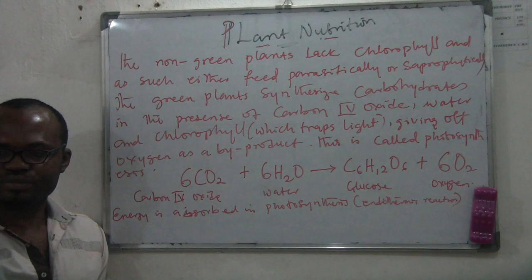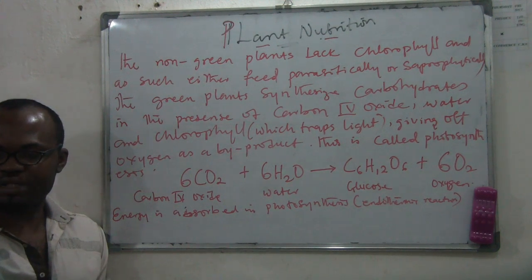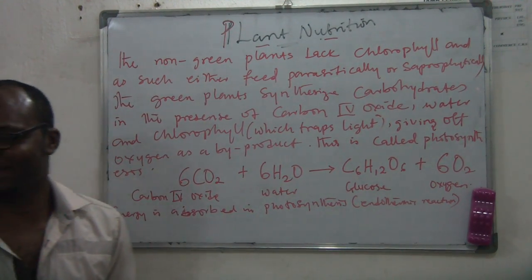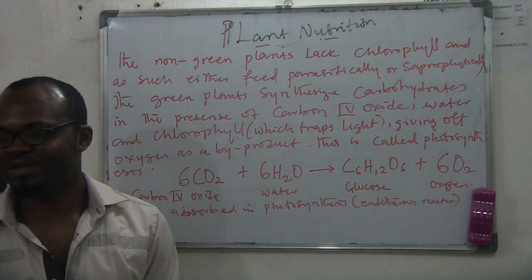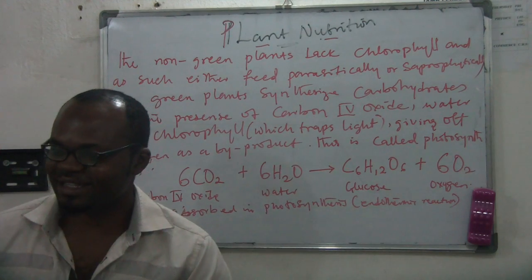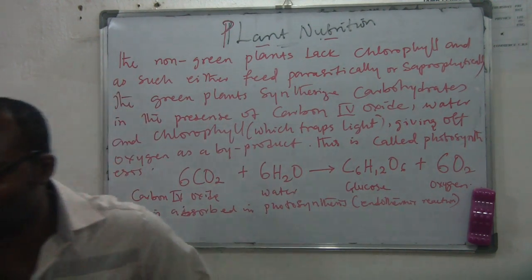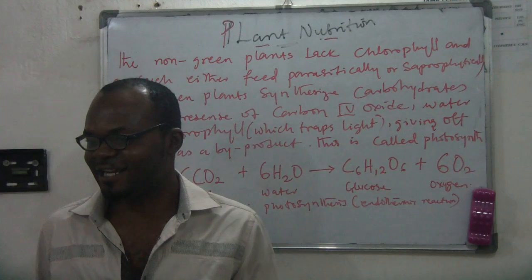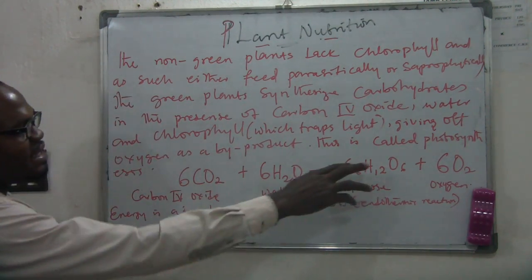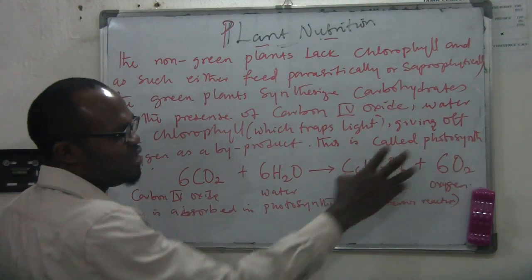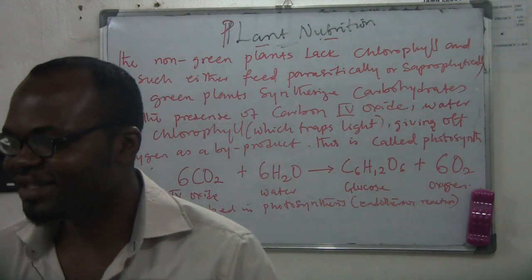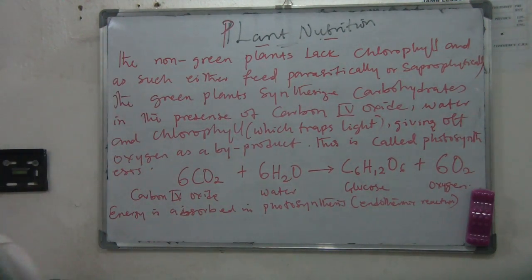Glucose is not necessary for photosynthesis to occur — glucose is the product. It is what is produced after photosynthesis has occurred. So photosynthesis happens in order to produce glucose, because glucose is the nutrient that plants need.